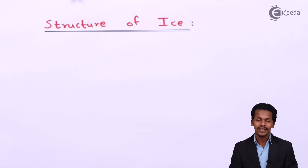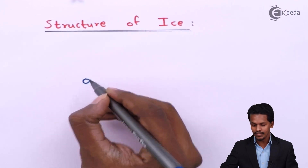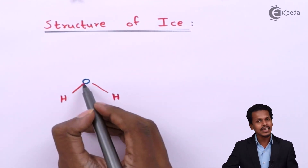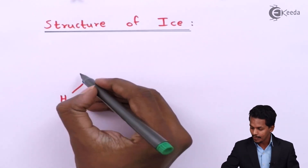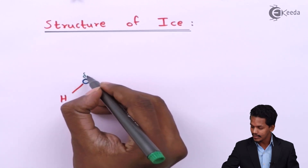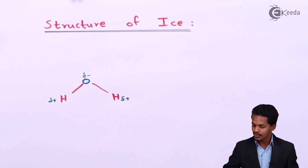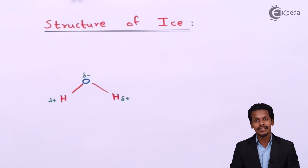Now let us discuss about what is the structure of ice and how it is comparatively different. According to x-ray study, it has been observed that the water molecule consists of an oxygen atom bonded with two hydrogen atoms. This oxygen atom is electronegative, and that's the reason it has the capacity to form hydrogen bonds with other water molecules. The oxygen is partially negative charge while the hydrogen is partially positive charge.